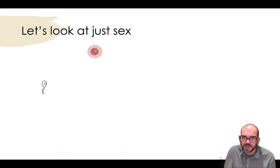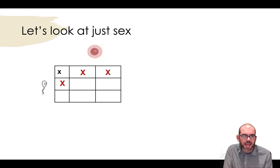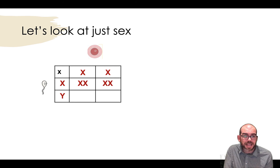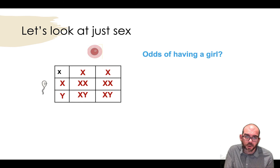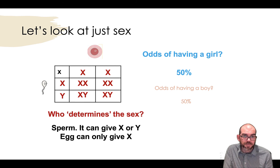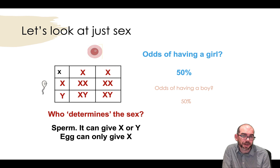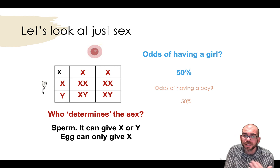Let's practice some Punnett squares with this. If I do a square just for the sex chromosomes, the egg is going to donate an X, and the sperm can donate either an X or a Y. That means every time there's fertilization — at least looking at human chromosomes — there's a 50% chance of having a girl and a 50% chance of having a boy; it's a coin flip each time. So what's determining the sex here? It's the sperm — the sperm is either going to carry an X or a Y, and that'll determine if it's a male-bodied or female-bodied person. The egg can only donate an X.